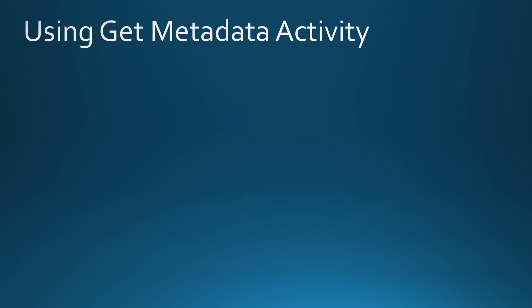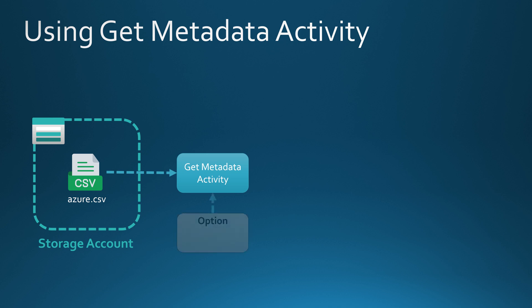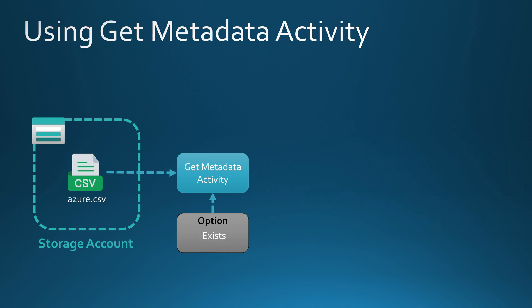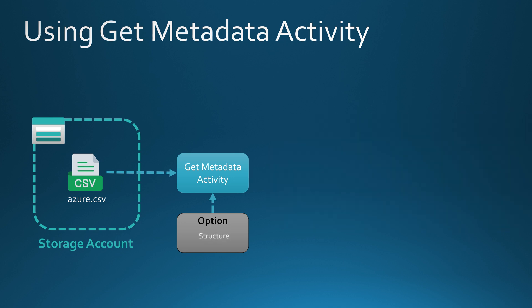Now let's look at a couple of these options and the outputs they would yield. Let's say we have a storage account with a CSV file called azure.csv. In our Data Factory pipeline we have a Get Metadata activity. With the option set to last modified, the activity outputs the last modified timestamp of that file. If we change the option to exists and run again, the return value is a boolean — in this case true, since the file is present. If the file didn't exist, Get Metadata would not throw an error but would return false.